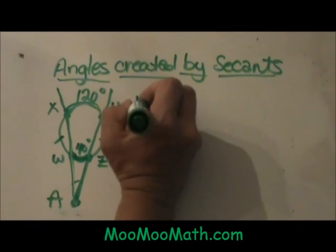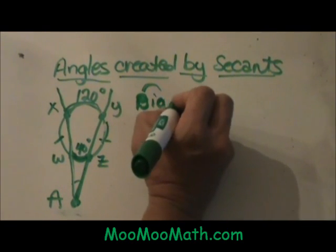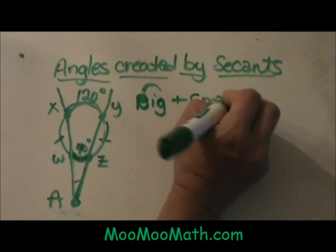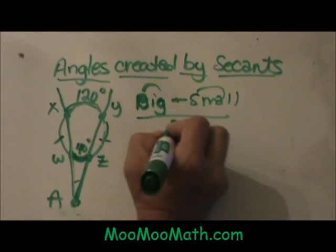We are going to take the big arc, which is 120 in this case, minus the small arc. We are going to take the difference and divide by two.